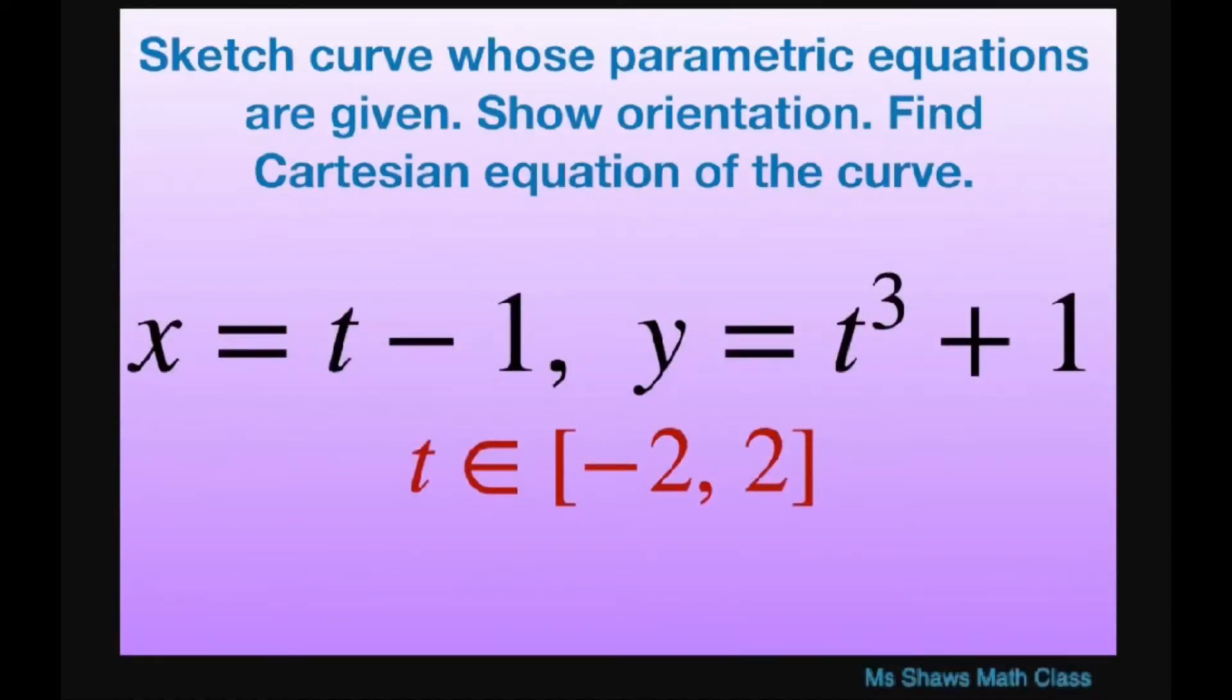Hi everyone. We're going to sketch the curve whose parametric equations are given, show the orientation, and find the Cartesian equation of the curve. And our interval is from negative 2 to 2.